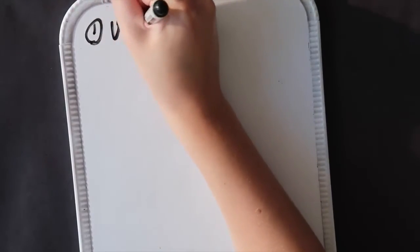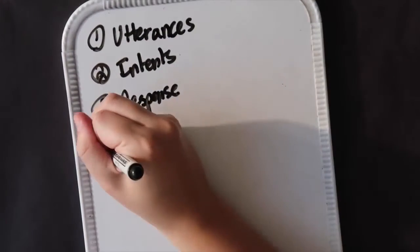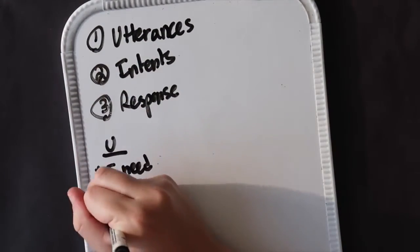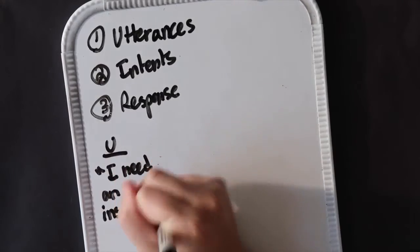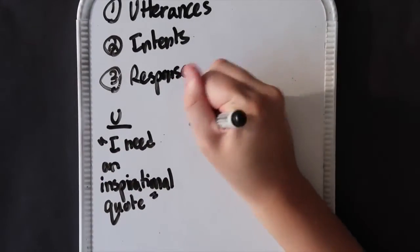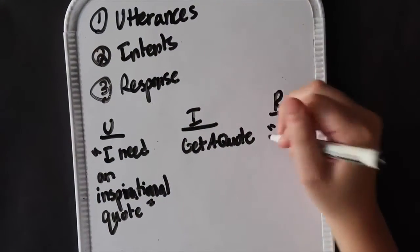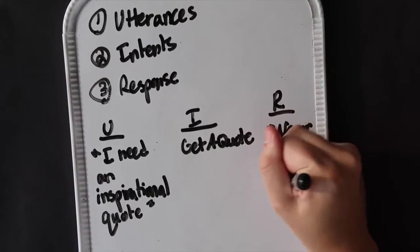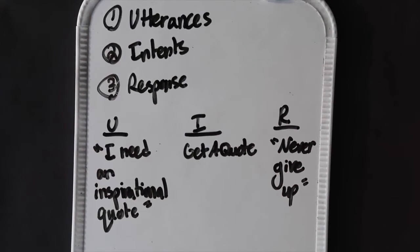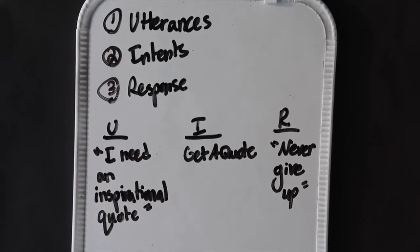The last part is the response — essentially, what do we respond with when we get a request with a specific intent? If someone says 'I need an inspirational quote,' the program would register that utterance as an intent to get a quote, then create a response making the Google Assistant say a given quote. Sometimes this response will be hard-coded, or it could be dynamic, allowing different responses depending on what is said. There are three parts: utterances, intents, and the response.